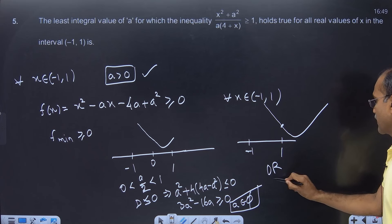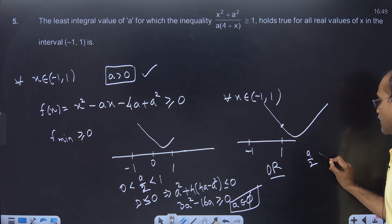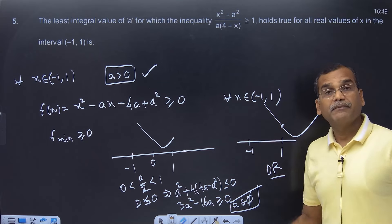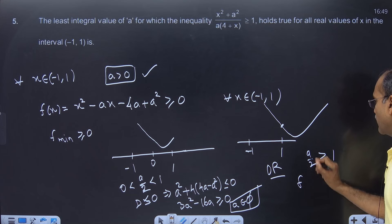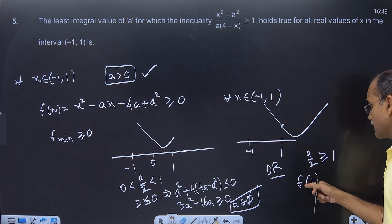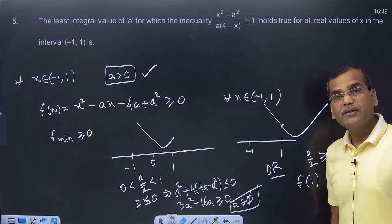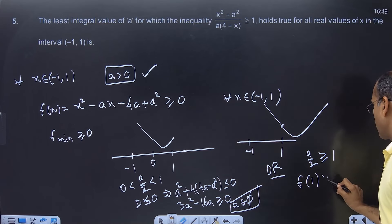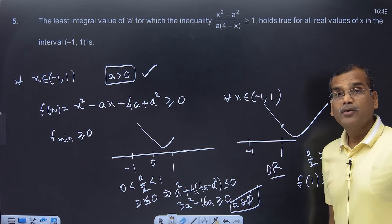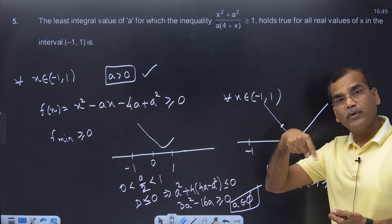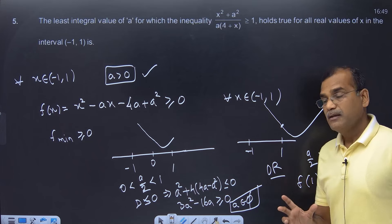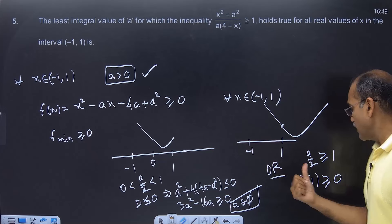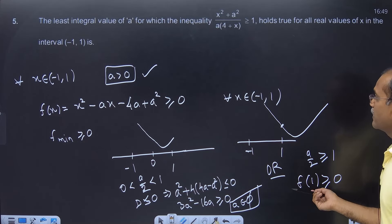Now let's move to Case 2: a/2 ≥ 1, meaning the vertex is to the right of 1. In this case, f_min occurs at x = 1. So f_min = f(1). I want that value to be greater than or equal to 0. Then your inequality will be true in the entire interval (−1, 1). So compute f(1) ≥ 0.